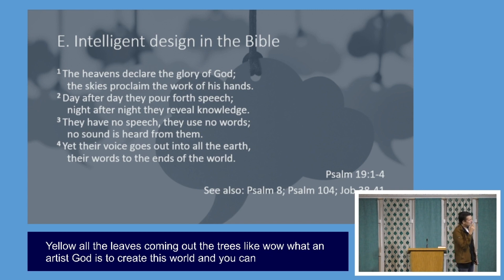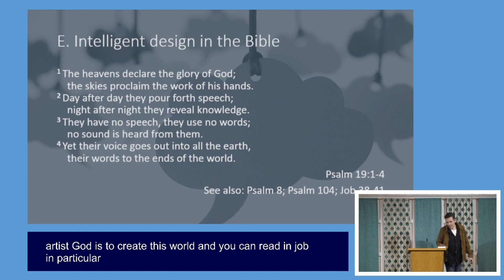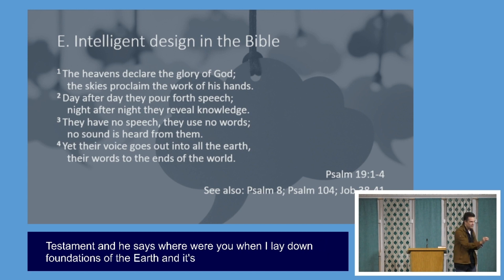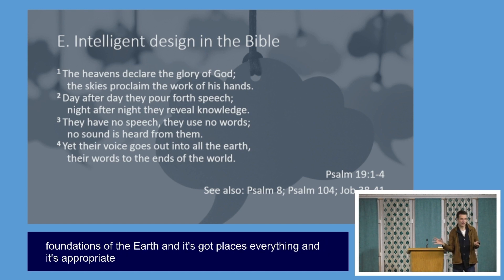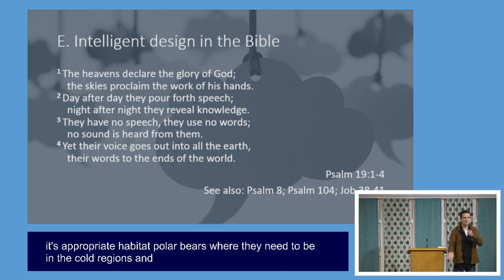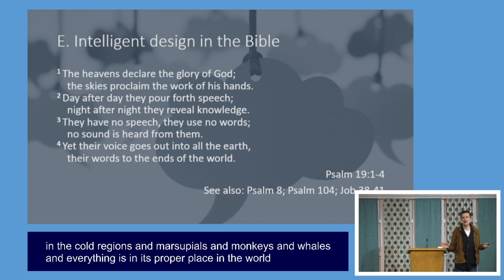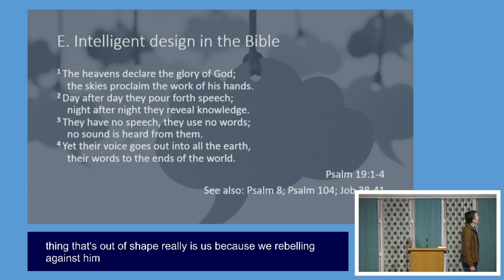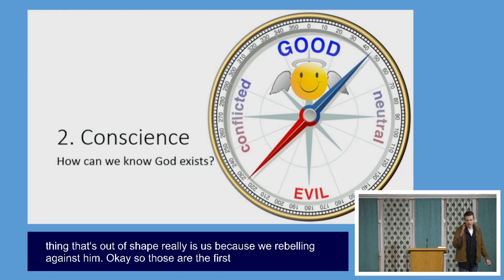We see that in the Bible where it says: 'The heavens declare the glory of God.' Driving down here tonight I saw a beautiful sun and dark clouds, with all the colours of the leaves coming out of the trees — what an artist God is. In Job, when God speaks he says: 'Where were you when I laid down the foundations of the earth?' God places everything in its appropriate habitat — polar bears in the cold, marsupials, monkeys, whales, all in their proper place. The only thing that's out of place is us, because we're rebelling against him.